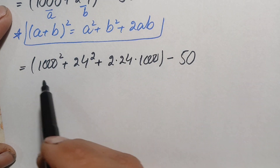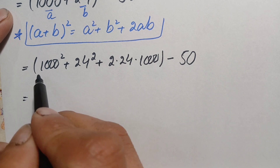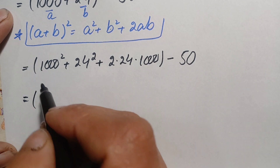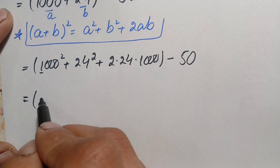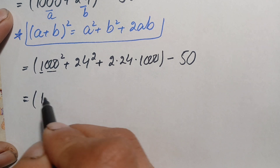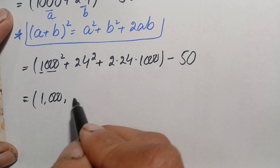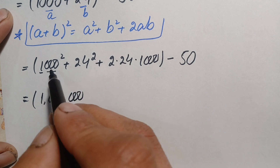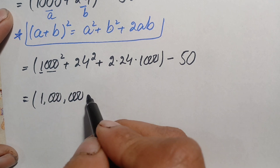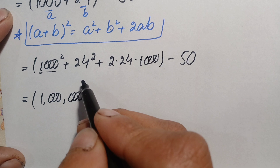We find the square of 1000: 1 squared is 1, and we write three zeros twice, giving six zeros total. So the square of 1000 is 1,000,000. Next, we find the value of 24 squared.